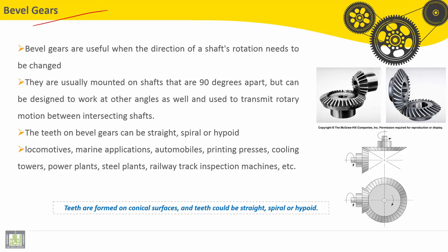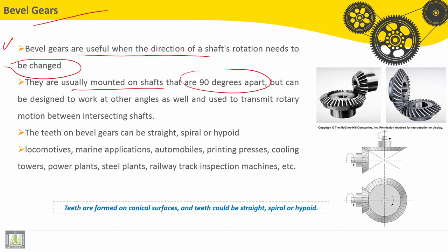Let's continue by presenting some features of bevel gears. Bevel gears are useful when the direction of a shaft's rotation needs to be changed. They are usually mounted on shafts that are 90 degrees apart, but can be designed to work at other angles as well, and are used to transmit rotary motion between intersecting shafts. Here we have intersecting shafts at 90 degrees.